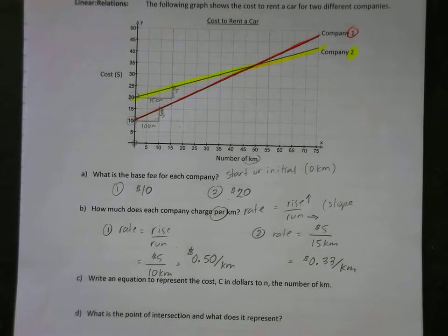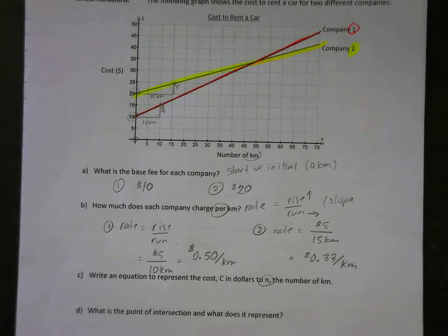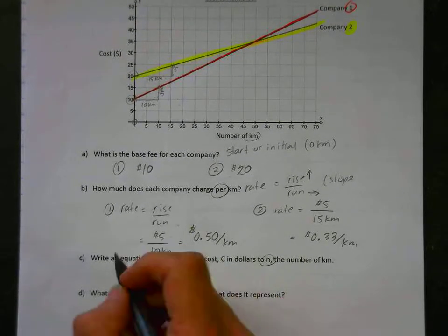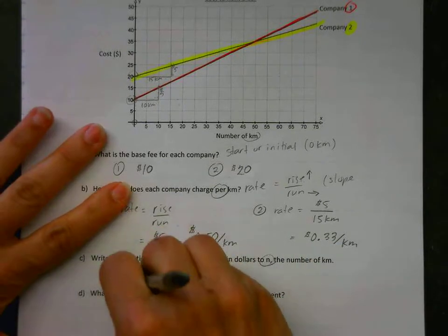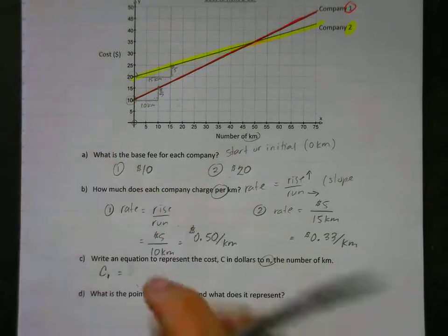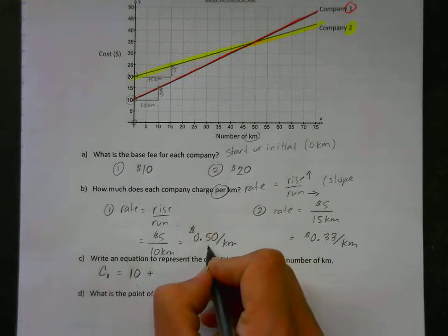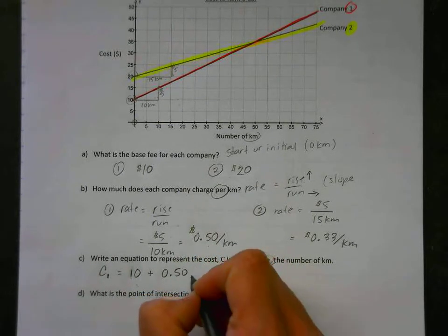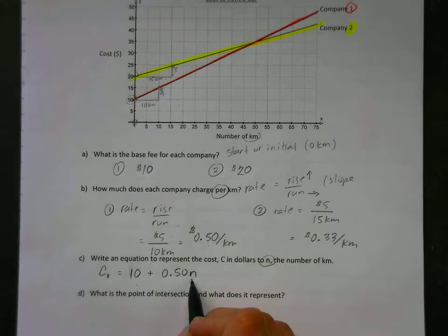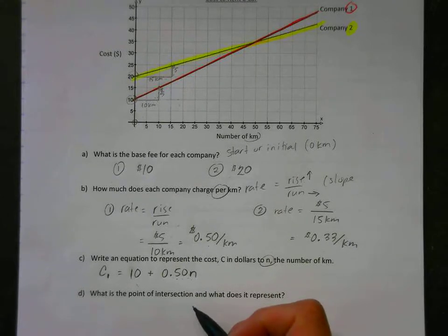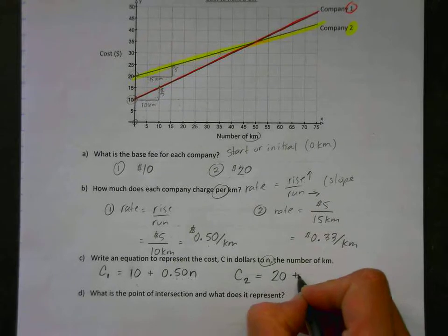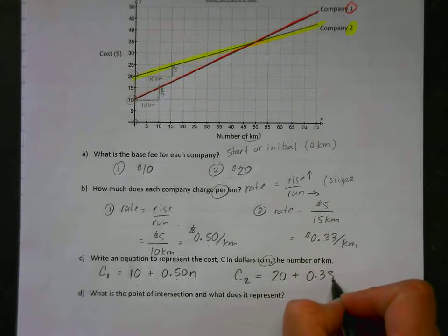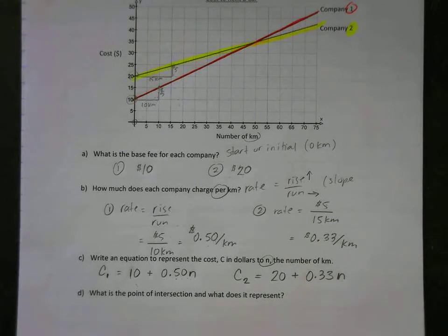Write an equation to represent the cost C in dollars and N the number of kilometers. So let's call number one's cost: an initial fee of ten dollars. We don't usually put units into our equation here, so there's our initial fee of ten dollars plus this fifty cents, and that has to be multiplied by the number of kilometers. So if I go one kilometer it costs fifty cents, two kilometers will end up costing a dollar, which is two times fifty cents. Company two has an initial rate of twenty dollars plus thirty-three cents, or 0.33 per kilometer. So that N represents the number of kilometers.